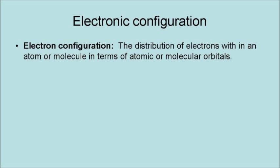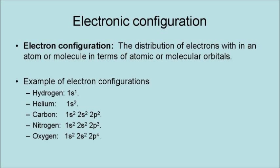An electron configuration is the distribution of electrons in an atom or molecule in terms of atomic and molecular orbitals. Here is an example of some electron configurations.